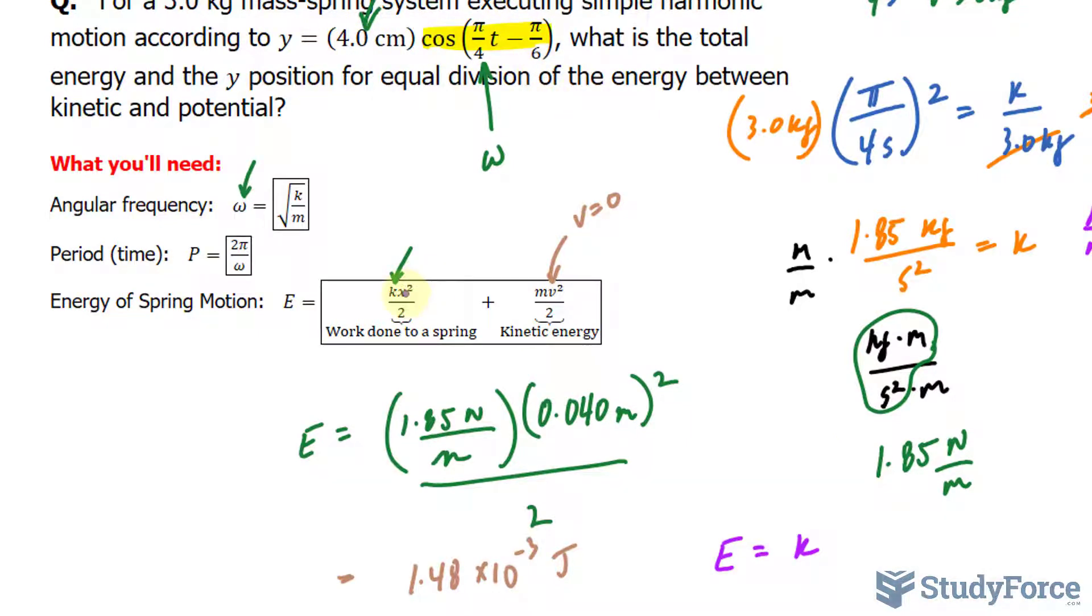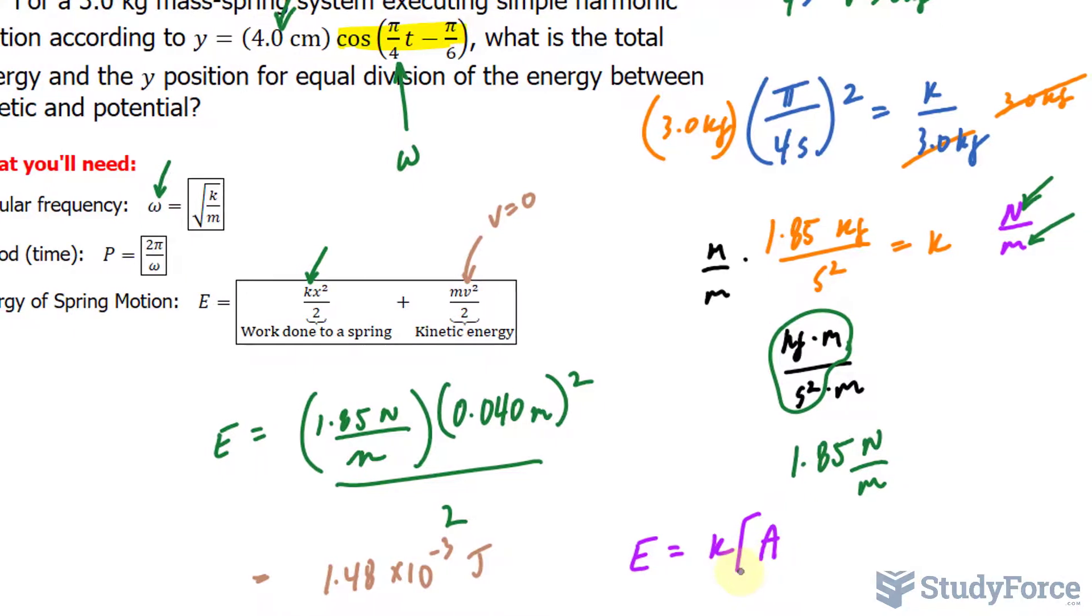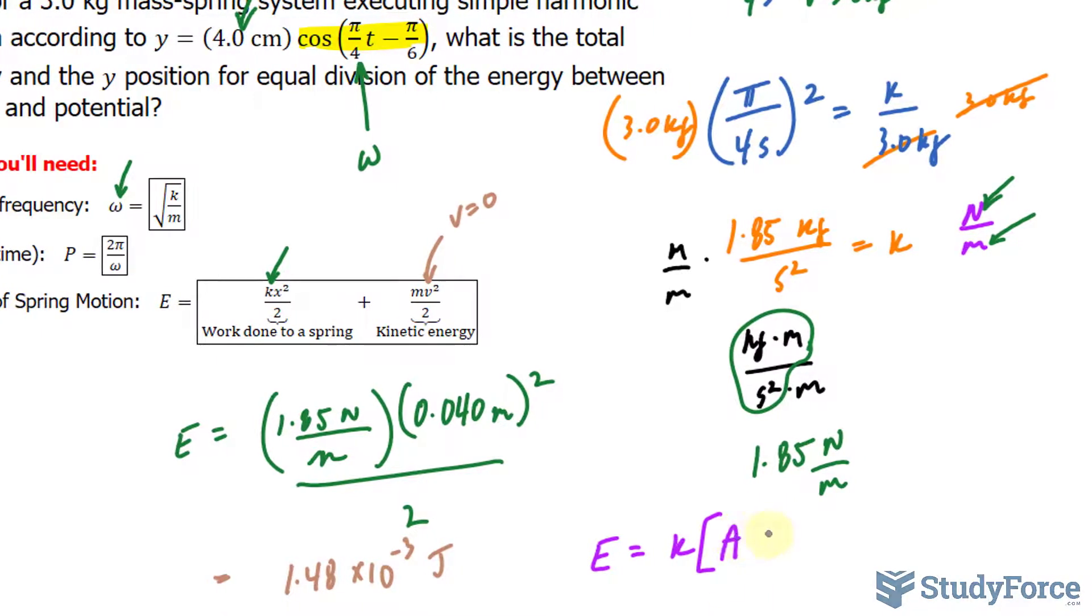And substituting this equation in for X, after all X represents the position, I have A for the amplitude. And I'm just writing it in its basic form, cosine(ωt + φ), cosine omega t plus our phase shift which I'll represent as phi, all being raised to the power of 2 divided by 2.